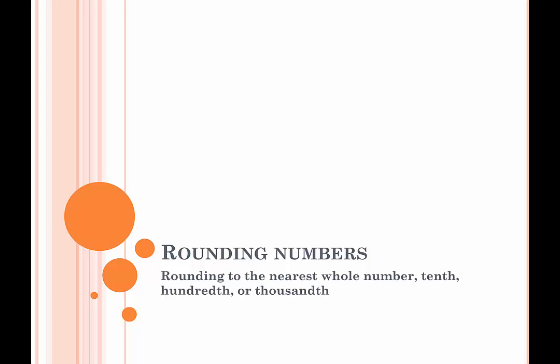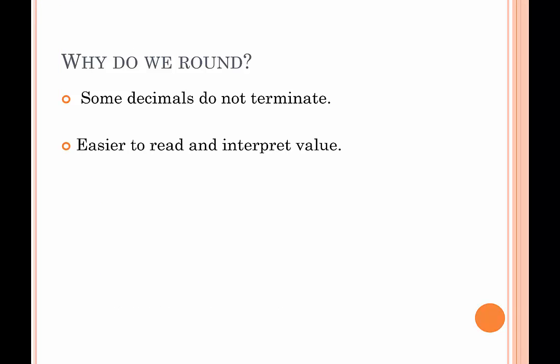Before we get to that, let's review what it means to round. Why is it important that we round numbers? Well, some decimals do not terminate. For example, the number 9.474747474747... it never ends. The four and the seven repeat and repeat. So there we would either need to round or put the bar over the repeating digits, but the bar isn't always an option and so we are forced to round.